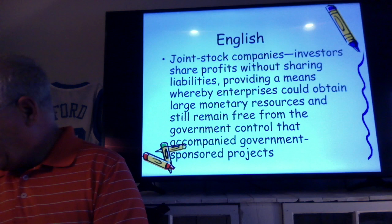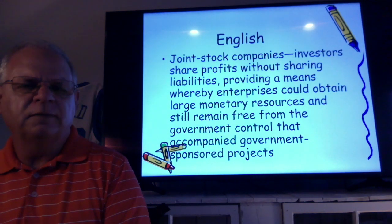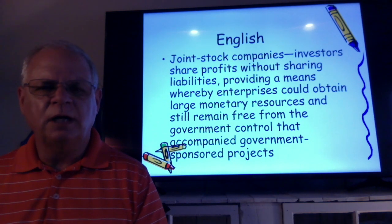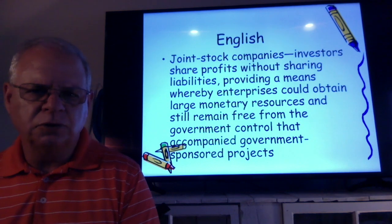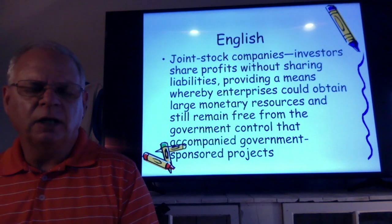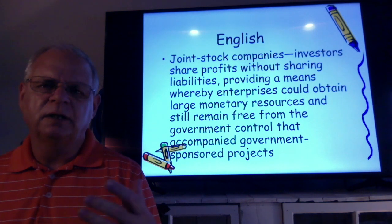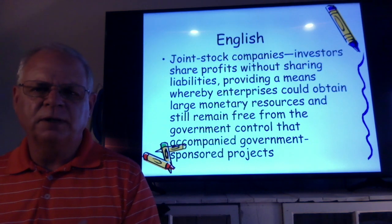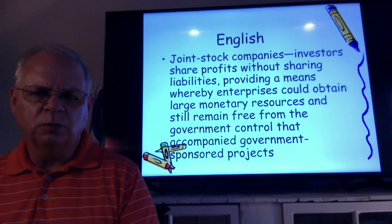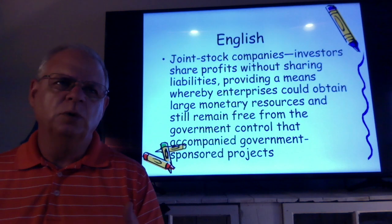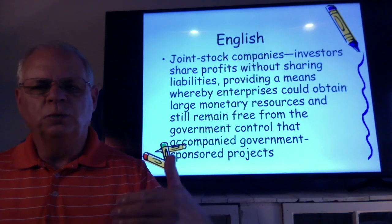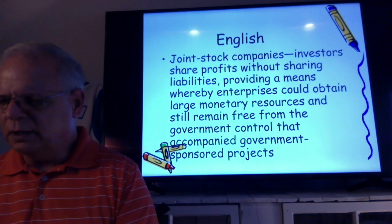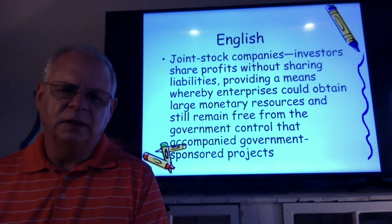On page 21, one idea for how colonization would be funded was the joint stock companies. It was very expensive for someone to put up all the money themselves to start a colony. With joint stock companies, many people invested and shared in the profits without sharing all the liabilities — they weren't going to lose everything. This provided a means for enterprises to get large monetary resources while remaining free from government control, giving them freedom to begin governing themselves.